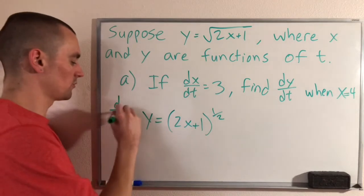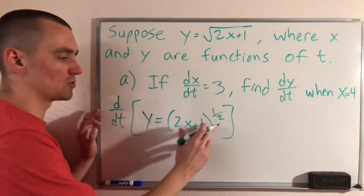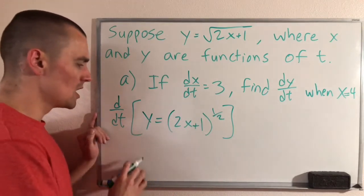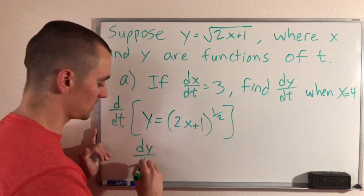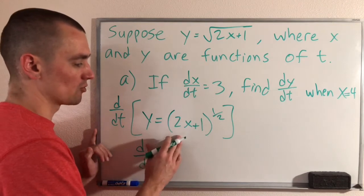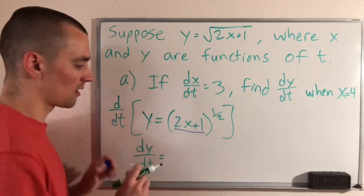So now when we take the derivative with respect to t of both sides of this equation, we can just do power rule and chain rule for the right side. First of all, derivative of y with respect to t is just going to be dy/dt. And then using the chain rule here, we will call what's in the parentheses our inside function.